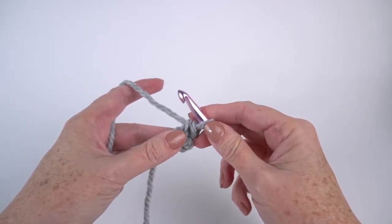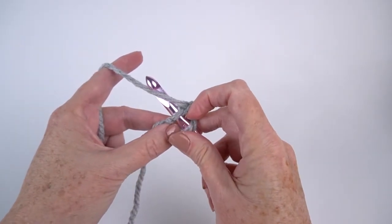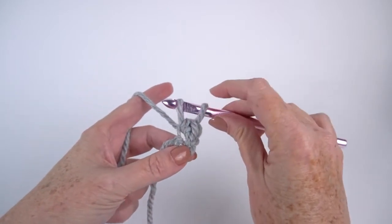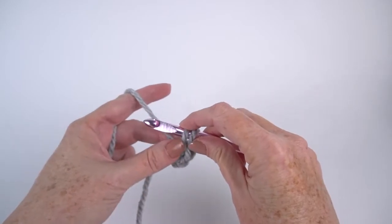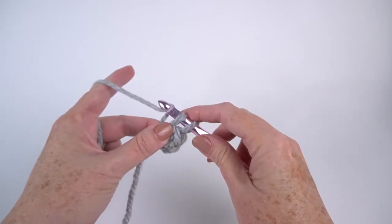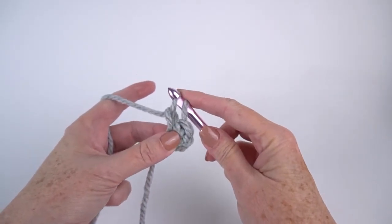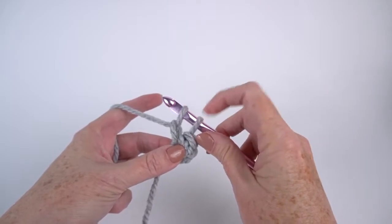So the next thing I'm going to do is insert my hook under that stitch that I just made, yarn over and bring it up. Now I have two loops on my hook. Now I'm going to chain one so I'm going to yarn over and pull it through just that one loop. Still have two loops on my hook.